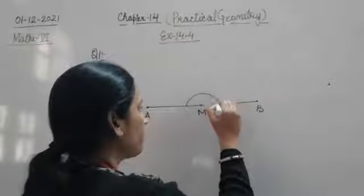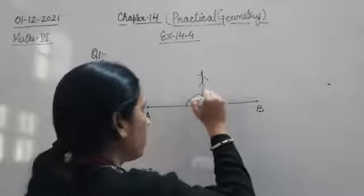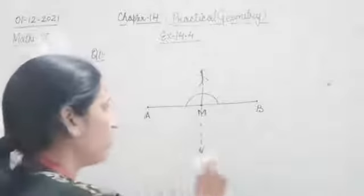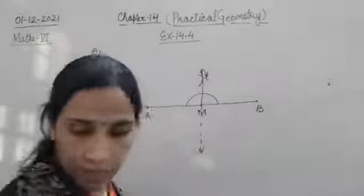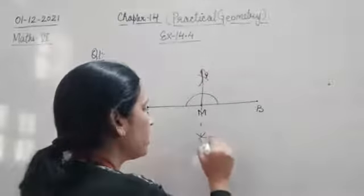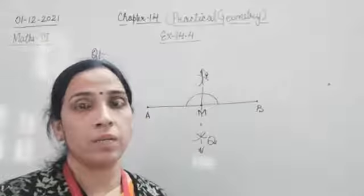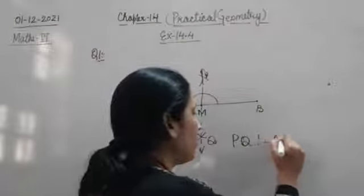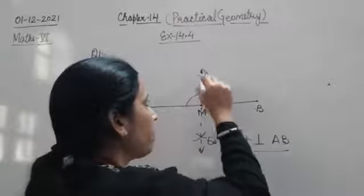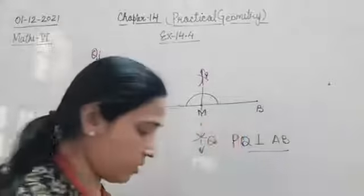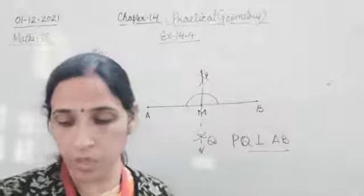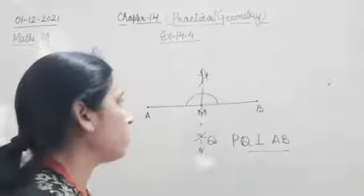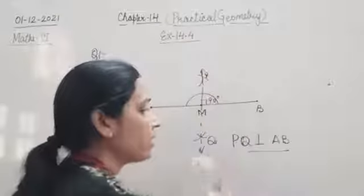Through M we draw an arc on both sides. Since a line segment cannot be extended from both sides like a line can, we draw the arc from M, then open the compass more than half and make intersecting arcs above and below. Join those intersection points — this forms a perpendicular to AP. You can verify by measuring the angle; if it is 90 degrees, it is perpendicular.